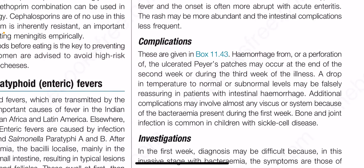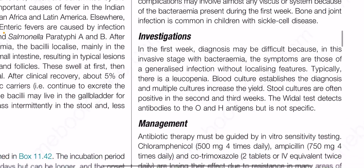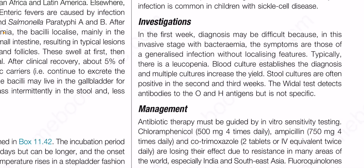Hemorrhage from or perforation of the ulcerated Peyer's patches may occur at the end of the second week or during the third week. A drop in temperature to normal or subnormal levels may be falsely reassuring in patients with intestinal hemorrhage. Additional complications may involve almost any organ or system due to the bacteremia present during the first week. Bone and joint infection is common in children with sickle cell disease.